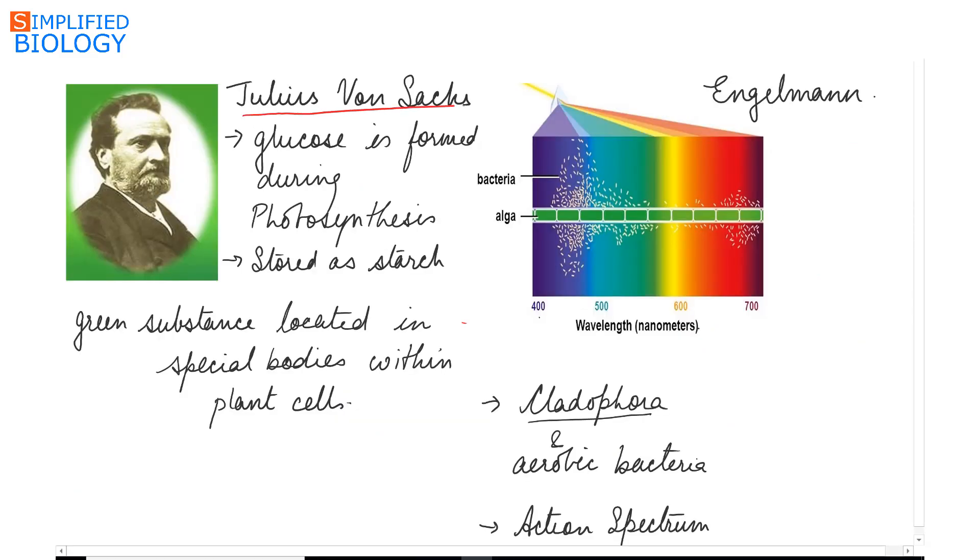Julius von Sachs showed that glucose is formed during photosynthesis and this glucose is stored as starch. He said that a green substance, that is chlorophyll, located in special bodies, that is the chloroplast, within the plant cells carry out photosynthesis and during photosynthesis sugar or glucose is formed.